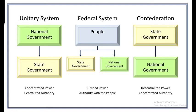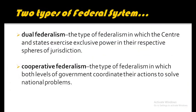In other words, under confederation there is decentralized power or concentration of authority in the hands of the units. Now, there are also two types of federal system: dual federalism and cooperative federalism.